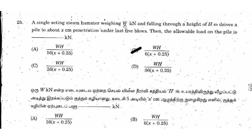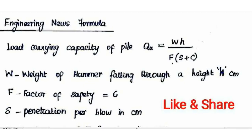Next question: a single-acting steam hammer weighing W kN and falling through a height of h meters drives a pile to x cm penetration under the last 5 blows. The allowable load on the pile is? This uses the Engineering News Formula. The load-carrying capacity of a pile is Q equals WH divided by the factor of safety 6, multiplied by S plus C.